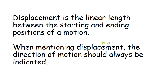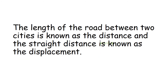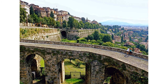Displacement is the linear length between the starting and ending positions of a motion, and the direction of motion should always be indicated. The length of the road between two cities is known as distance, and the straight distance is known as displacement. The geographical direction from one city towards another is used to indicate direction. Similarly, motion along a staircase is distance, and the motion of an escalator is displacement — its direction being the direction of motion of the lift.